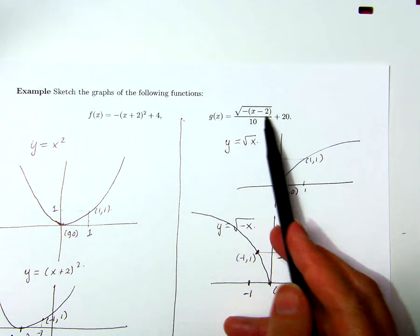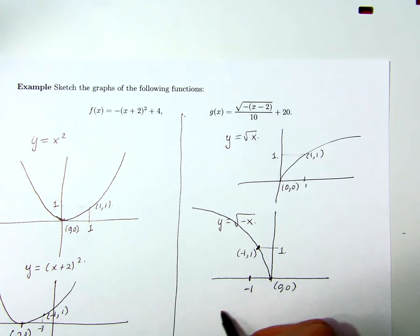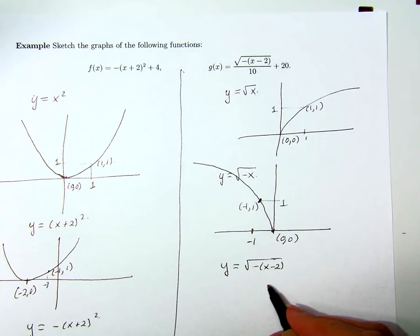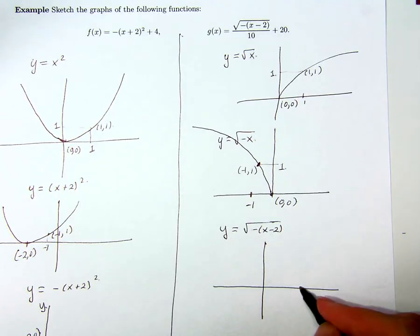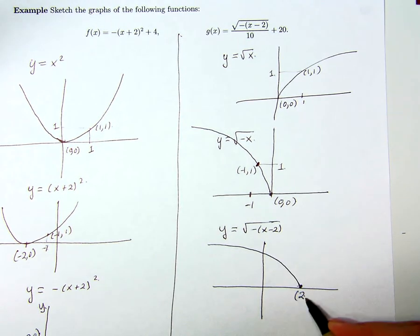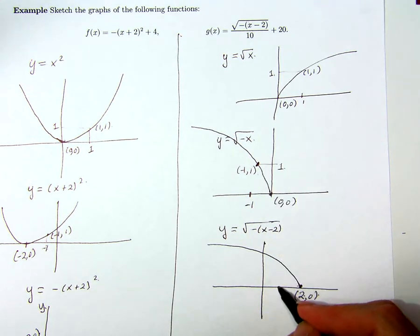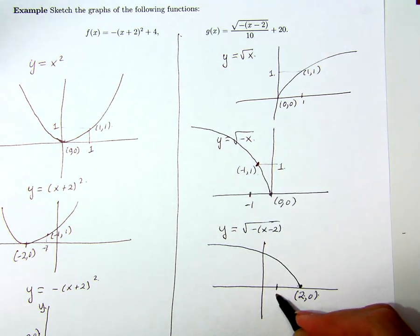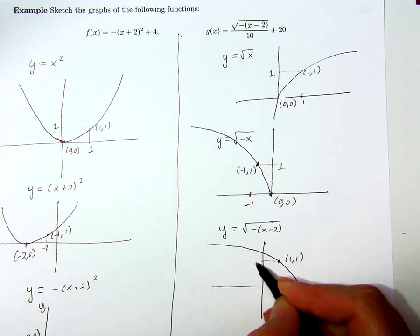And now I'm going to subtract two from the x. So that means I'm going to shift this to the right by two units. So everything here gets shifted to the right by two units. Now I have the point two zero on the graph, and this one gets shifted to the right by two units. So that's now at the point negative one plus two, so that's one. And the y-value remains the same. So it's one one. Back at one one again.